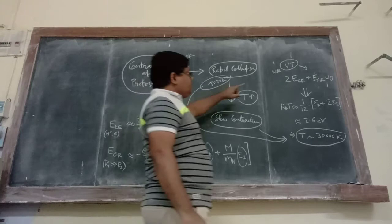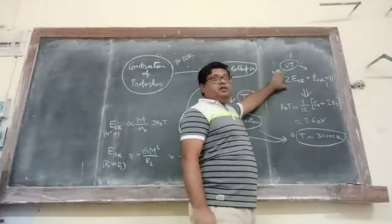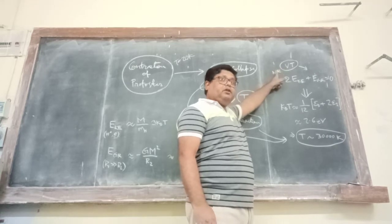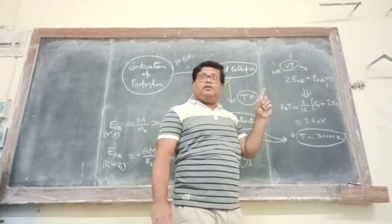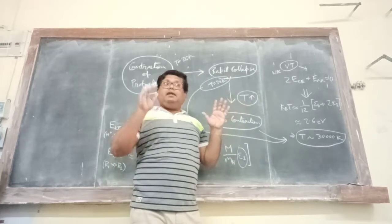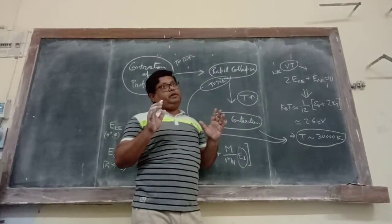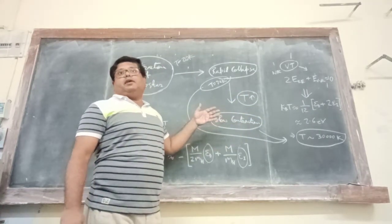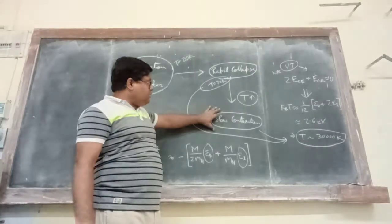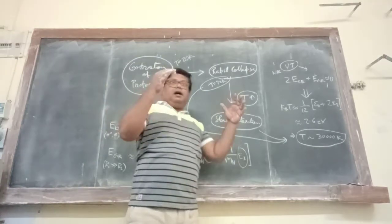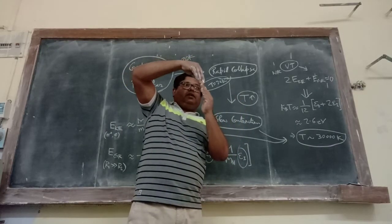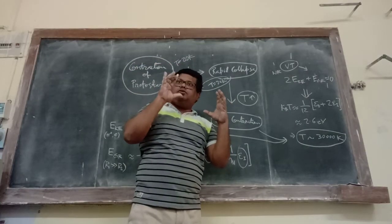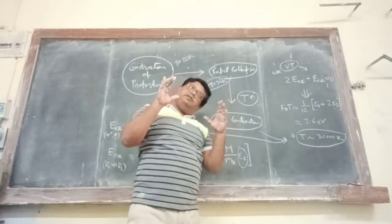Regarding the application of the Virial theorem here — you must remember that we derived this relation not only for the non-relativistic case, but also there is a very important assumption: the entire system must be in hydrostatic equilibrium. Now this is what is happening here. When the slow contraction starts, gravity and pressure start to equalize slowly, and the system is close to hydrostatic equilibrium. As a result, we are using this Virial expression here.